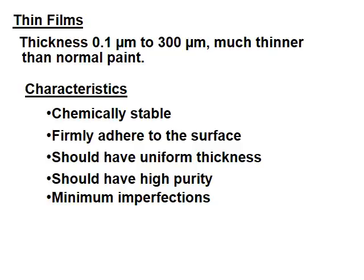Thin films have a thickness of about 0.1 micrometer to about 300 micrometers — much thinner than normal paint. The characteristics these thin films must have include: they must be chemically stable, they must firmly adhere to the surface, they should have uniform thickness, they should have high purity, and almost no imperfection.